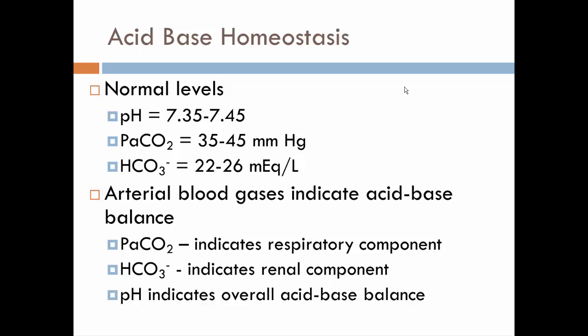The bicarbonate level is going to indicate what the kidneys are doing to help make sure acid-base homeostasis stays normal. And then, of course, the pH is the overall acid-base balance itself. So what you'll see as we go through these, we're going to look at CO2 levels and bicarbonate levels and the pH and therefore be able to determine any abnormalities in acid-base homeostasis.